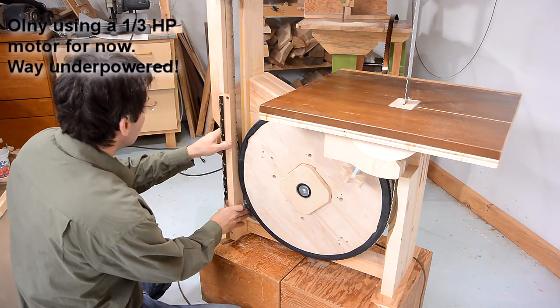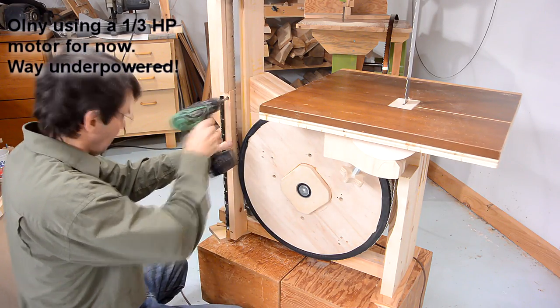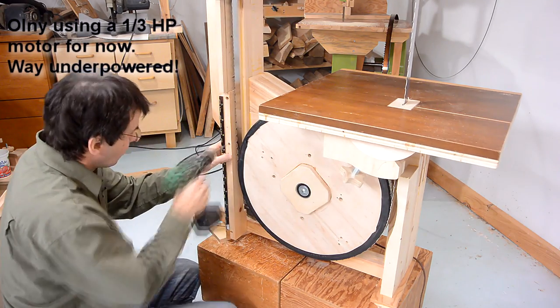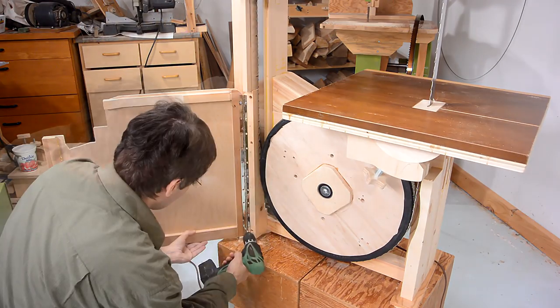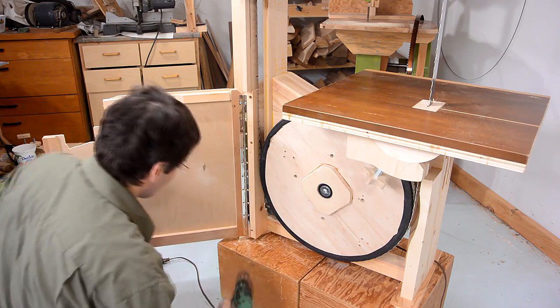I didn't film making the parts of the lower enclosure, because mostly I just wanted to get her done. The lower lid is just a piece of plywood with wood glued along the edge, and a funny notch cut out to clear the trunnions.